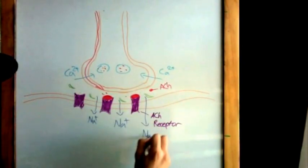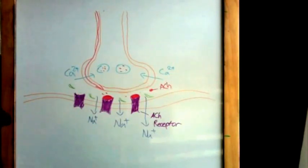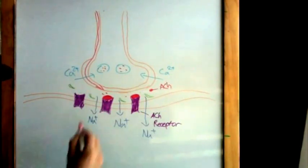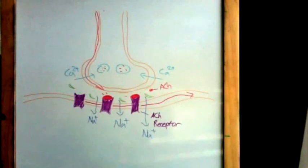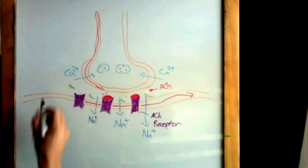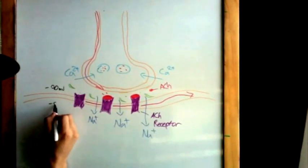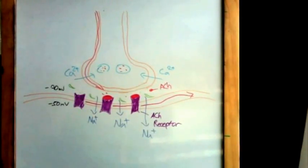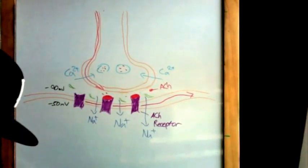This forms an end plate potential and depolarizes the post-synaptic membrane, releasing an action potential. Now remember, at resting potential, the outside of the cell is at negative 70 millivolts. When sodium ions diffuse into the cell, it brings it down to threshold at around negative 50 millivolts. When threshold is reached, an action potential is released.